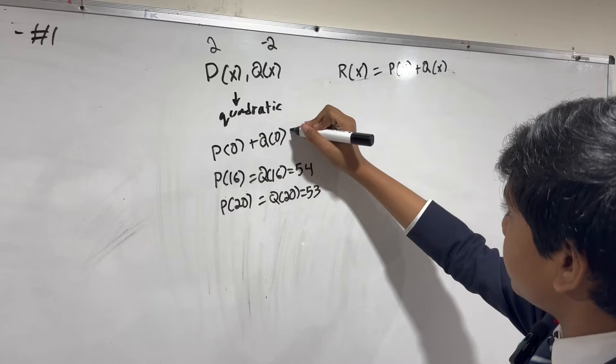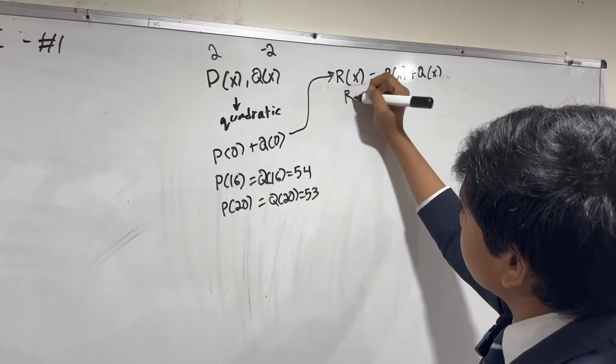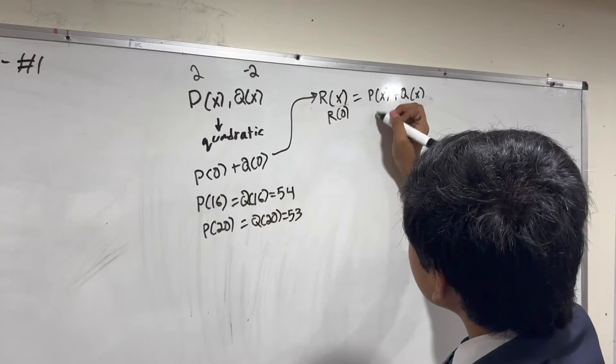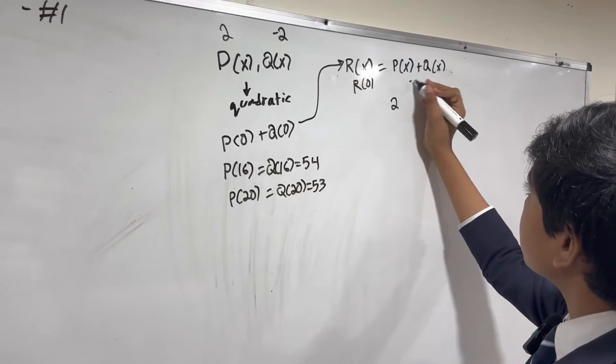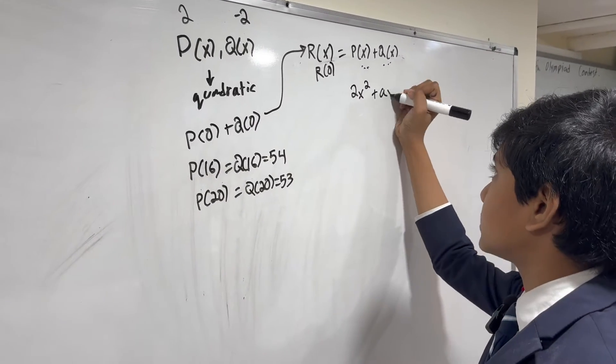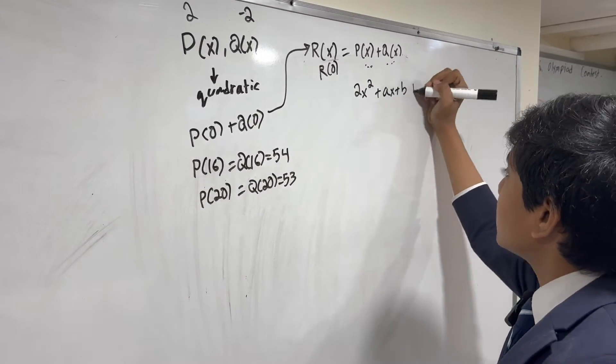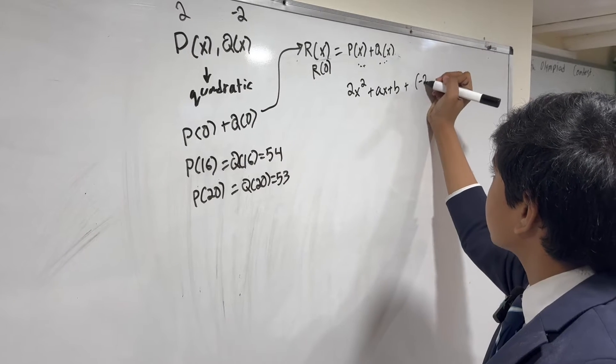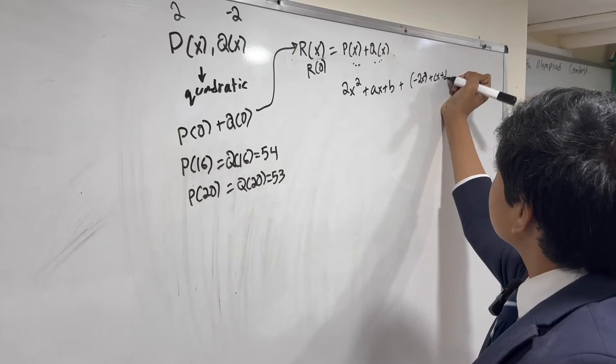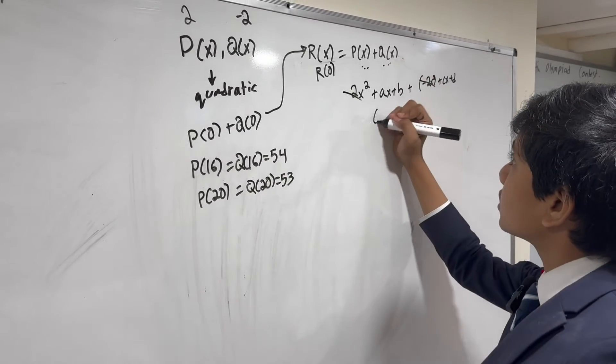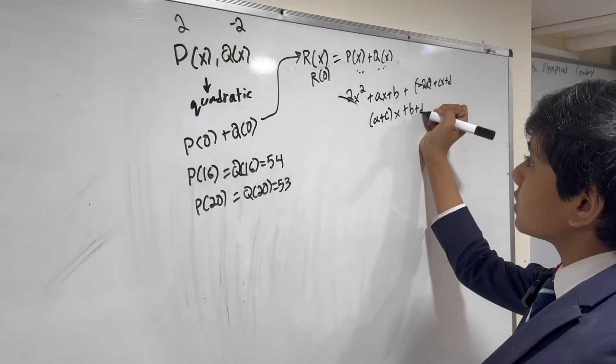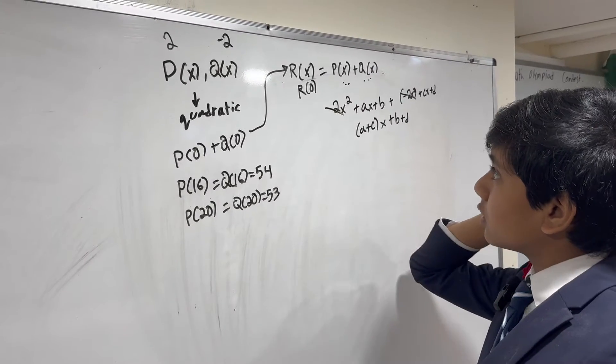Now, it's apparent that we're just finding R of 0 in this problem. It doesn't really matter what these two are, because we have 2x squared plus ax plus b plus minus 2x squared plus cx plus d. So, these quadratic terms will cancel out, so we already know that R of x is really just a linear equation.